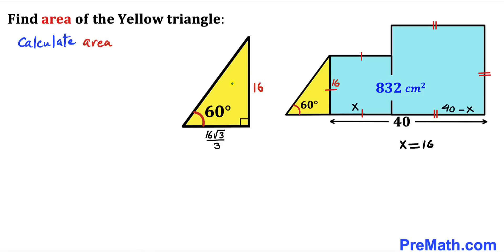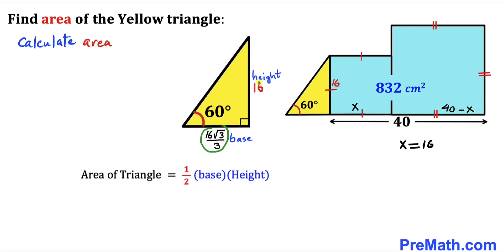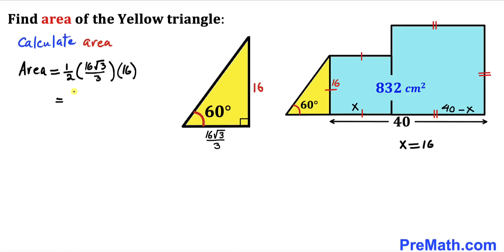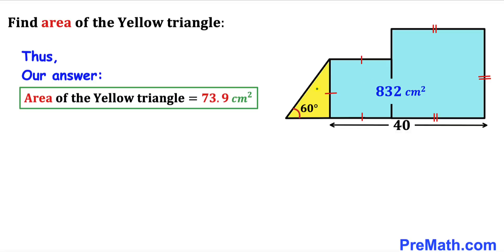Now let's calculate the area of the yellow triangle using the formula: area equals one half times base times height. Our base is 16 times square root of 3 divided by 3 and our height is 16. So the area equals one half times (16√3 / 3) times 16, which simplifies to 128 times square root of 3 divided by 3, which equals approximately 73.9 centimeters squared.